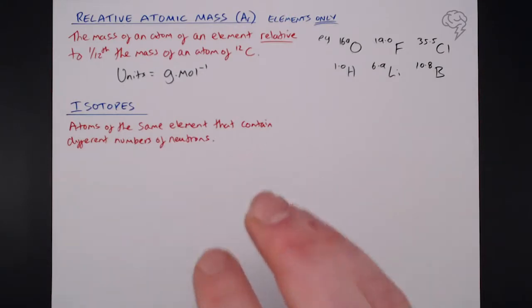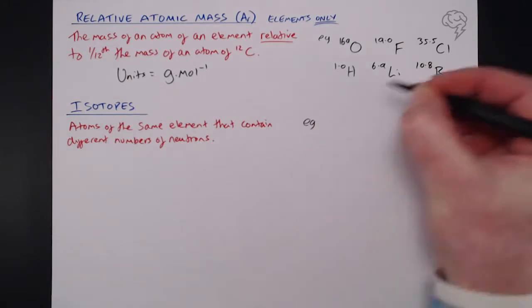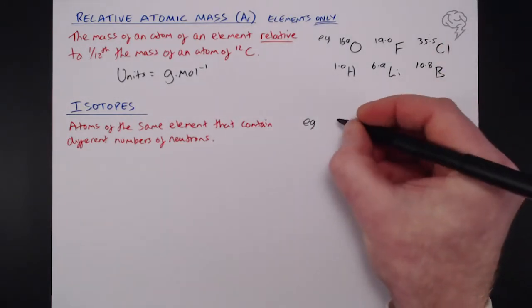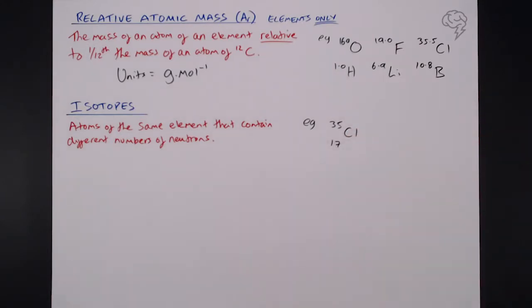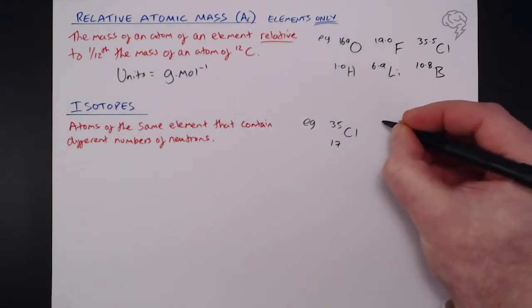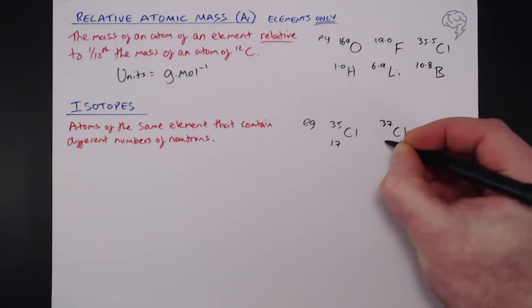So what we're saying here is that they have the same number of protons, but a different number of neutrons, because of course, it's the protons that dictate what the element is. So for example, let's take chlorine from up here. I know for a fact that in the universe, there are two major isotopes of chlorine, chlorine-35 and chlorine-37.